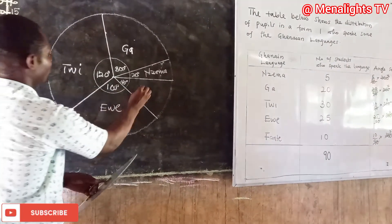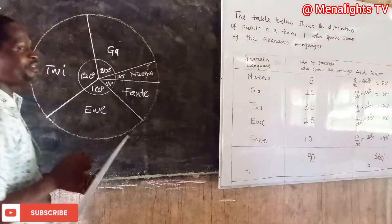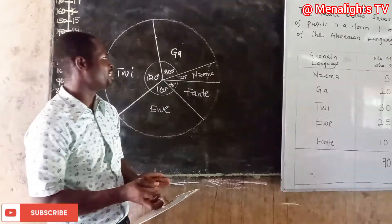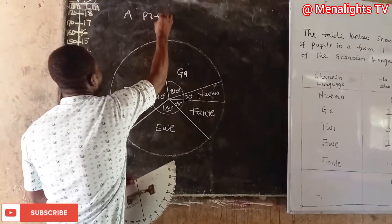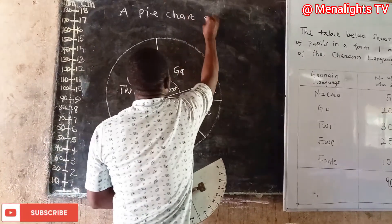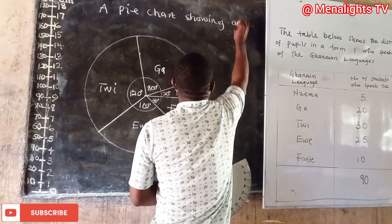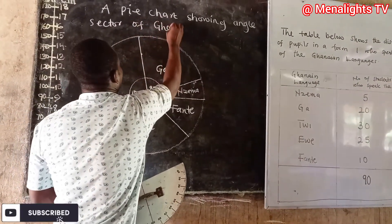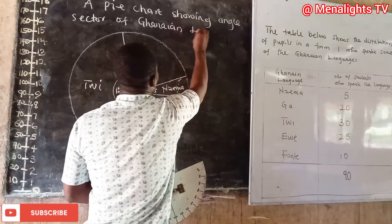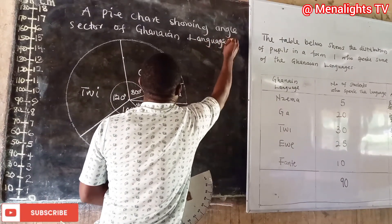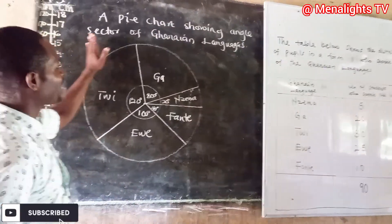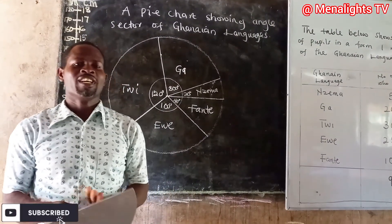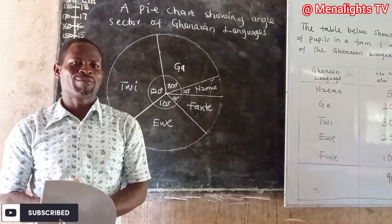Every drawing needs a title, so we give this one a title: 'A pie chart showing the angle sectors of Ghanaian languages.' Thank you so much for watching today's episode. Remember to subscribe to the channel, Manalize TV, for updates.